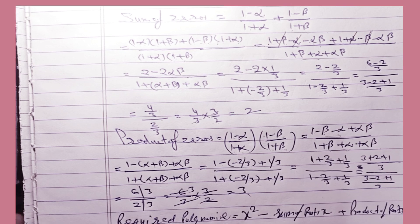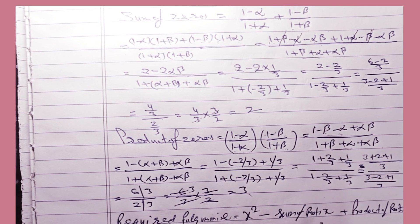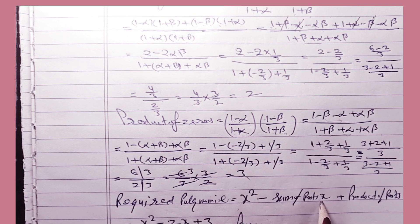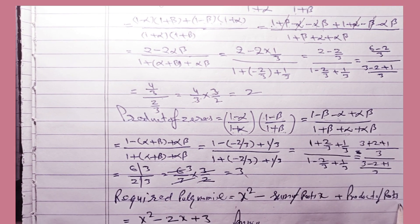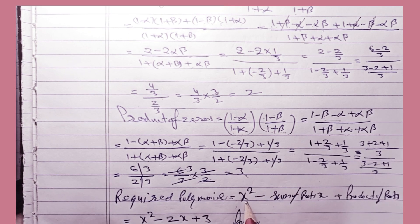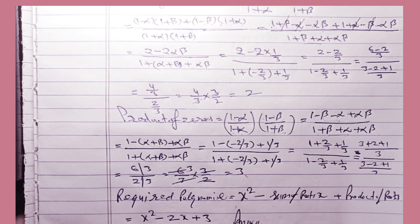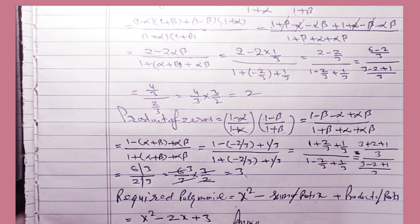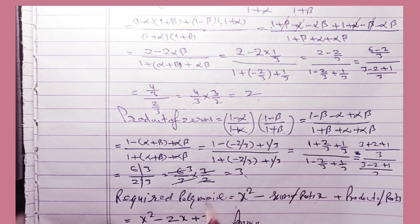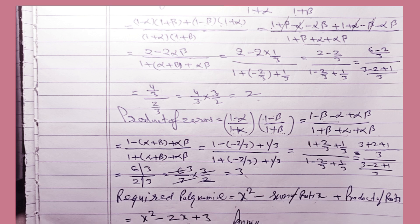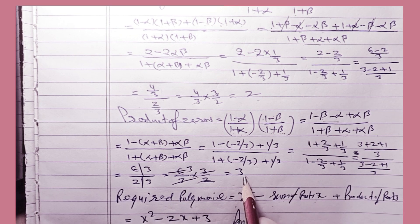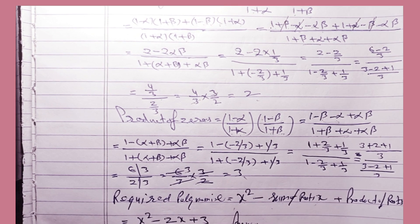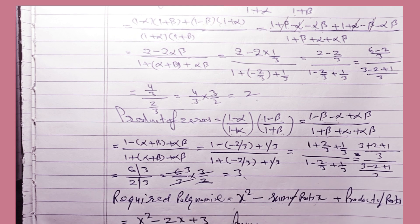So the required polynomial will be x² - (sum of roots)x + (product of roots). Here sum of roots is 2 and product of roots is 3. So the polynomial is x² - 2x + 3. That is your answer.